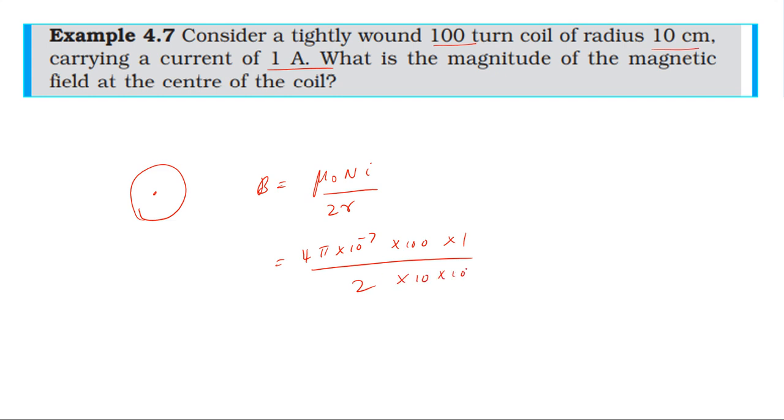So 10 into 10 power minus 2. The 4 and 2 cancels, 10 power minus 2, 10 power minus 7 cancels to minus 5. Then 10 power minus 5, 10 power minus 4. The answer is nearly 6.28 into 10 power minus 4. This is the answer, 6.28×10⁻⁴. Thank you.